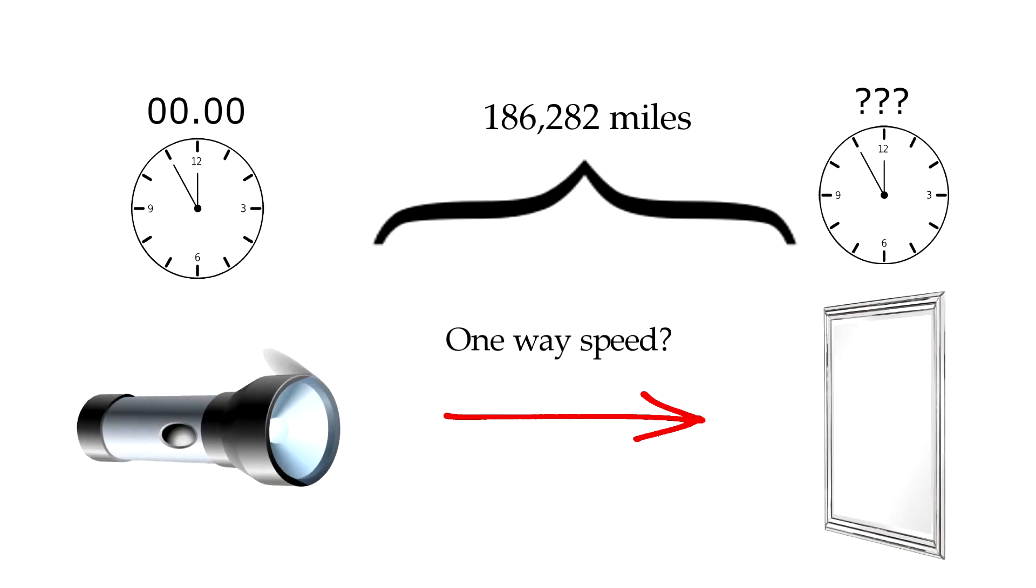But, we do not know what is the one-way speed of light. It cannot be measured. Physicists have tried this in the past, but in order to measure the one-way speed of light, you have to already know the one-way speed of light.